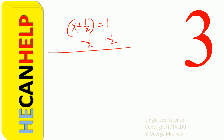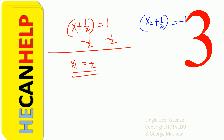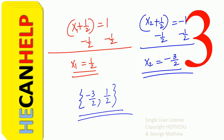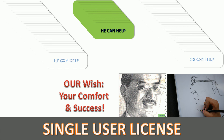What is 1 minus 1 half? So you get x1 equals 1 half. For the other solution, let's call that x2: x2 plus 1 half is equal to negative 1. Subtract 1 half from both sides and what do we get? x2 is equal to negative 1 minus 1 half, which is negative 3 over 2. So our solution set is negative 3 over 2 and 1 half.